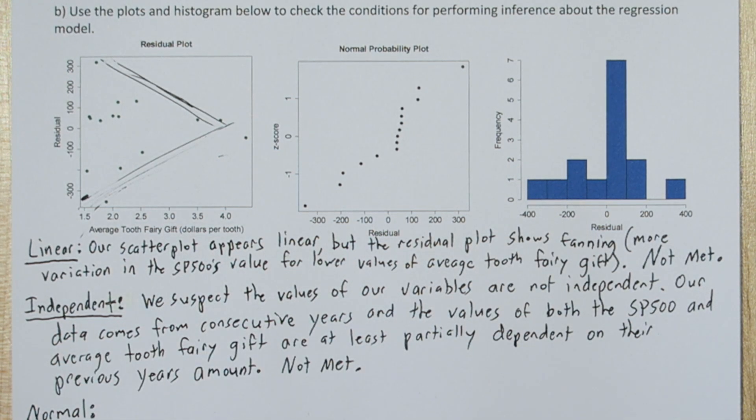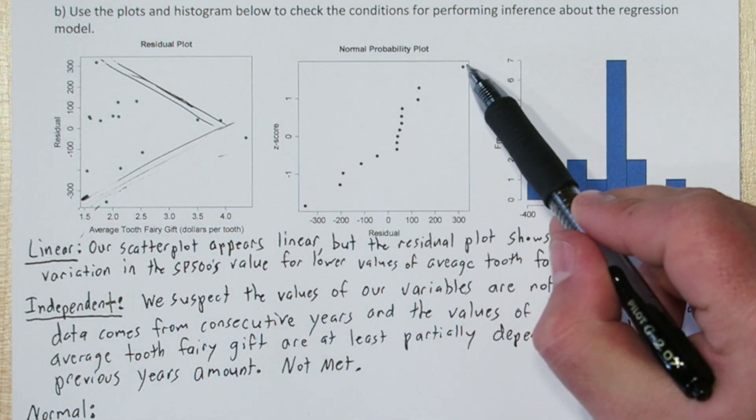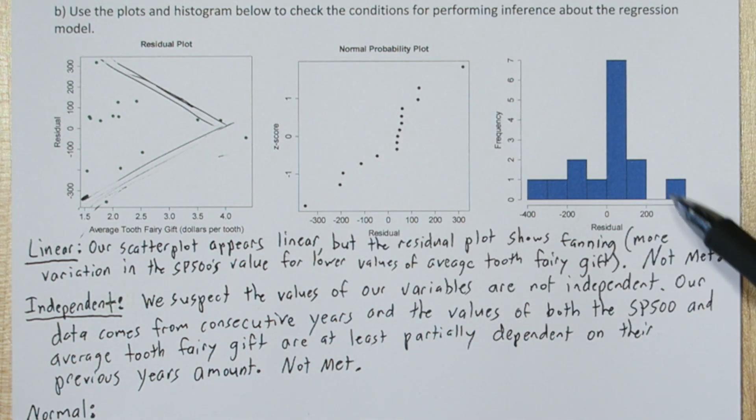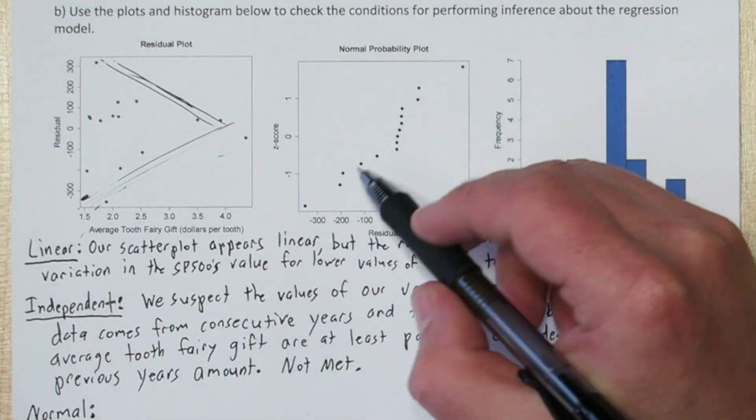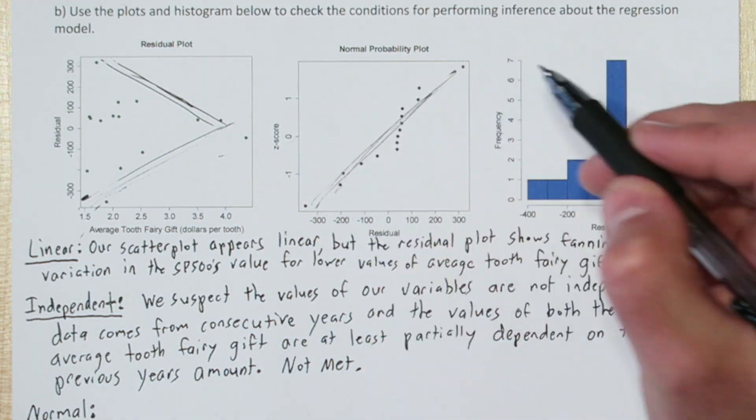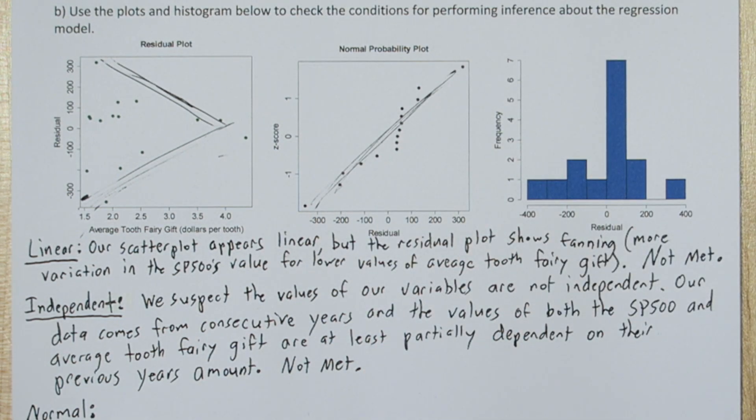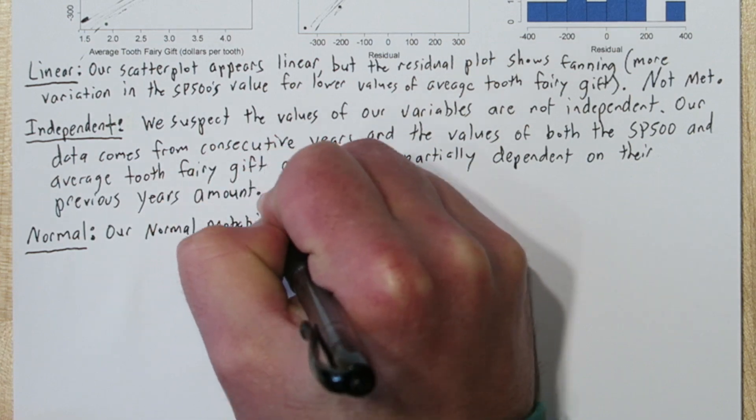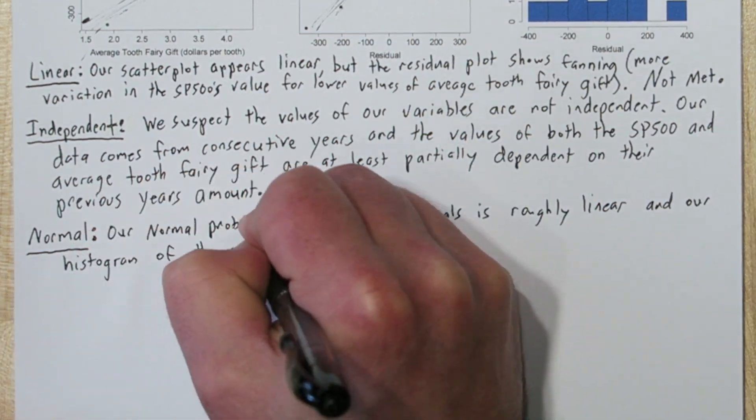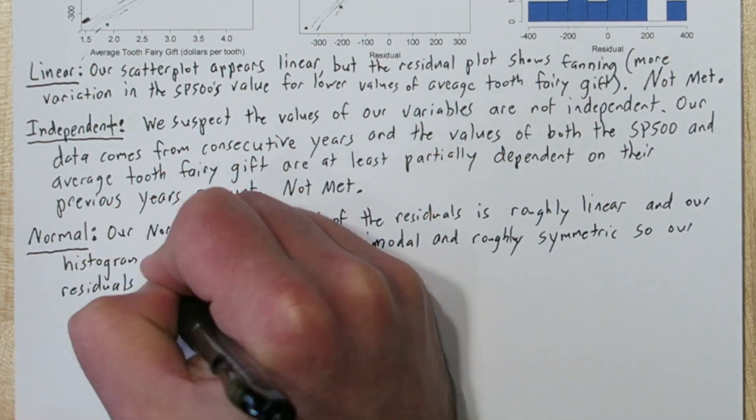Next is the normal condition. What we have is a normal probability plot of the residuals and a histogram of the residuals. We're checking to see if the residuals are approximately normally distributed. Now the normal probability plot of the residuals is roughly linear, and our histogram is unimodal and roughly symmetric, so this condition might be met. The residuals are approximately normally distributed, so we'll say this condition is met.